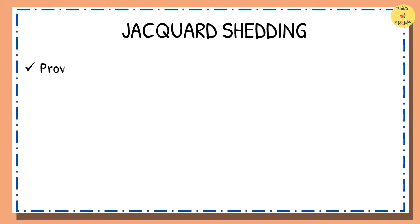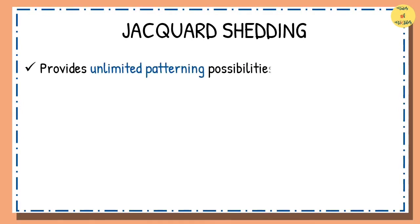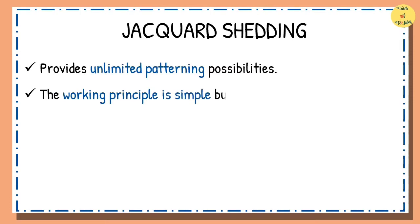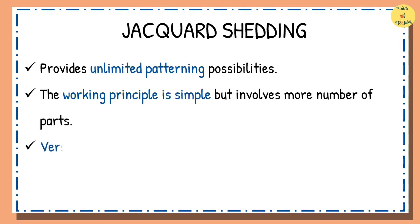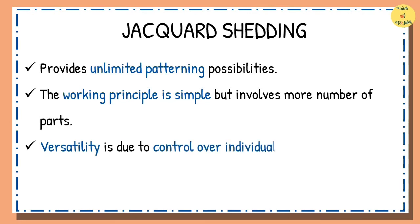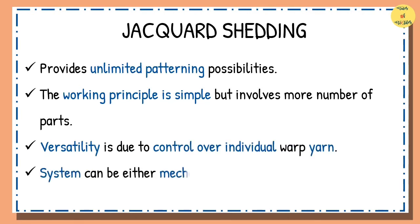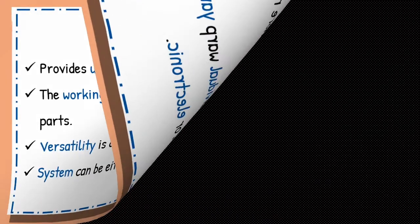The jacquard shedding provides unlimited patterning possibilities. The working principle is relatively simple but involves more number of parts, making it a complex machine. The versatility of jacquard shedding is due to control over individual warp yarn, and the jacquard shedding system can be either mechanical or electronic.